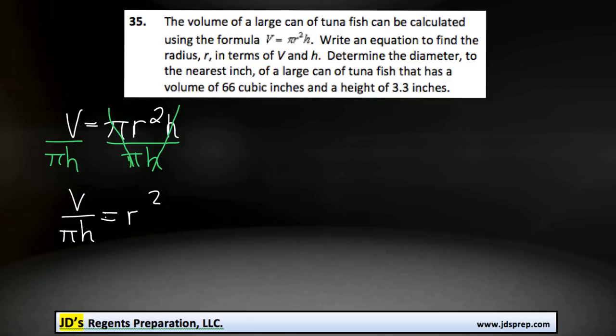So at this point we'd have V over pi times the height is equal to the radius squared. Now to completely isolate the radius, we would have to square root both sides, and then we would get that the radius is equal to the square root of the volume divided by pi times the height.